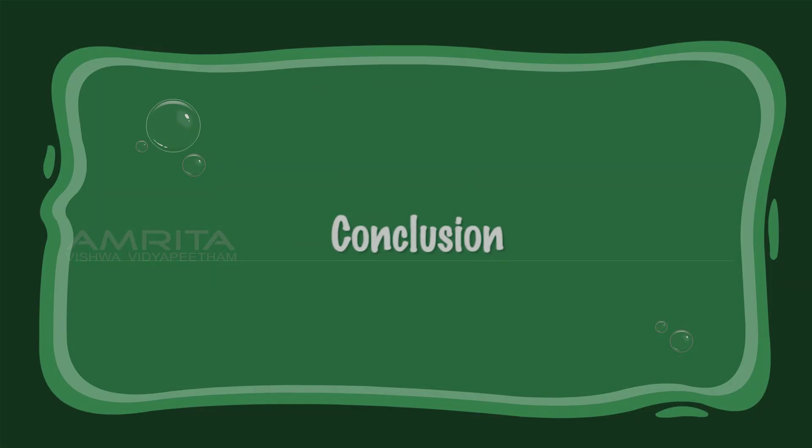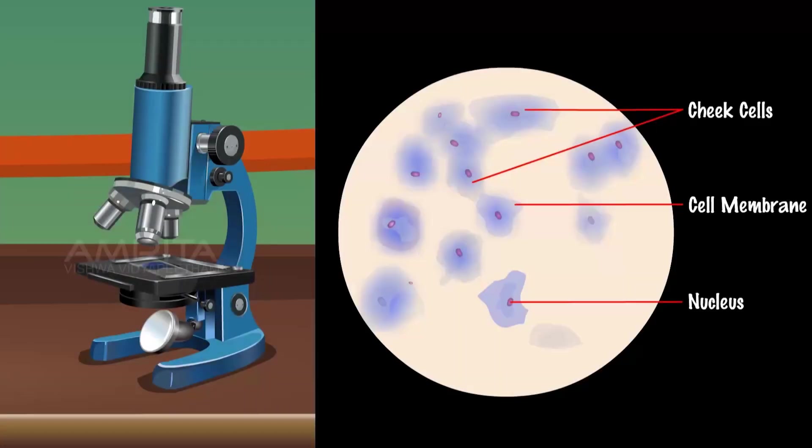Conclusion: As the cells observed do not have a cell wall or a prominent vacuole, the cells of the specimen on the slide are animal cells.